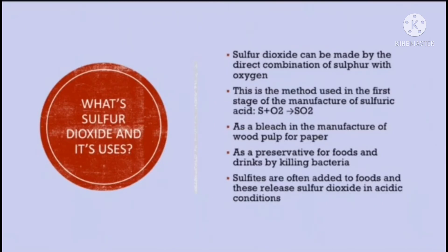What is sulfur dioxide and its uses? Sulfur dioxide can be made by the direct combination of sulfur with oxygen. This method is used in the first stage of the manufacture of sulfuric acid, which we will be looking at later. The chemical equation is S + O₂ → SO₂, giving us sulfur dioxide. The chemical formula of sulfur dioxide is SO₂.